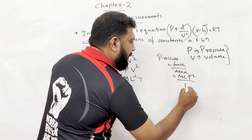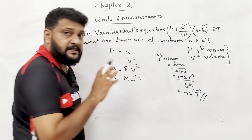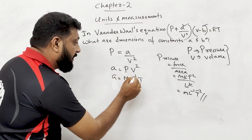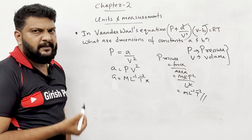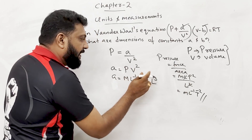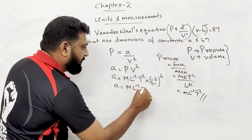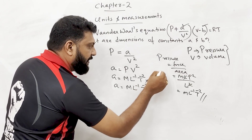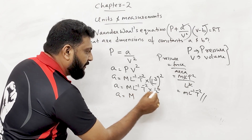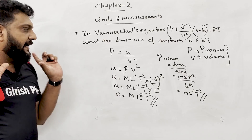Volume V has dimension L³, so V² has dimension L⁶. Therefore, dimension of A = M·L⁻¹·T⁻² × L⁶ = M·L⁵·T⁻². That is the dimension of constant A.